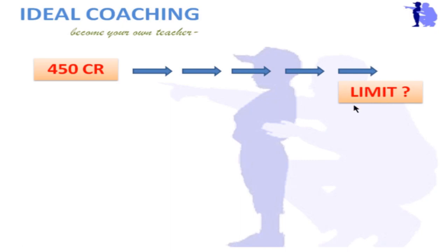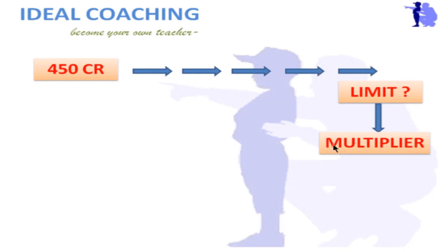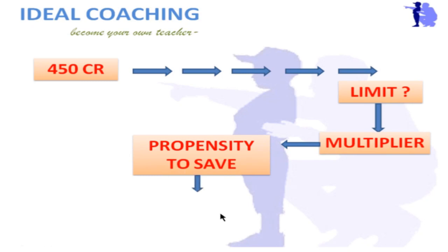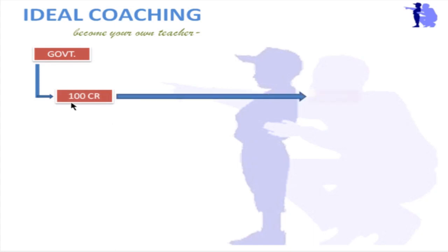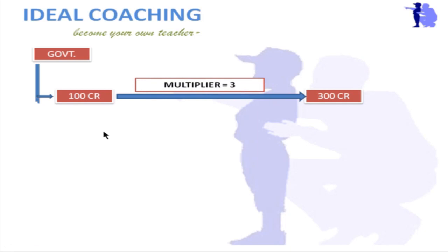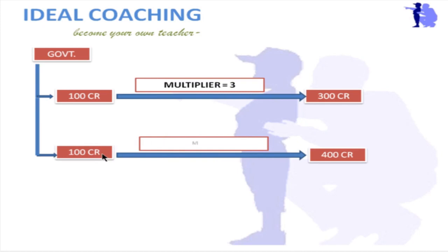Will there be any limit to this increase? Yes, there is a limit, and that limit is known as the multiplier. The multiplier is the limit to which the government's money will be increased, and it depends upon the propensity to save or the propensity to consume. Suppose government injects 100 crores and it converts into 300 crores — that means the multiplier is 3, three times. If government injects 100 crores and it becomes 400, the multiplier is 4. You might wonder: how has this money increased if it is only rotating in the market?